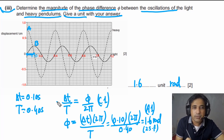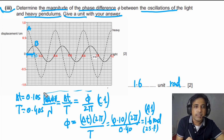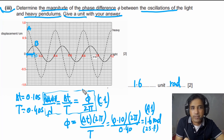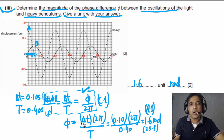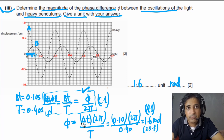We can also extend this equation for waves: phase difference = (path difference / λ) × 2π. This is a very important equation for A-level and AP physics. That's all for this question and this video. The next video will also be about May June 2022 Paper 4 Variant 2, discussing another question from the same paper. See you in the next video.